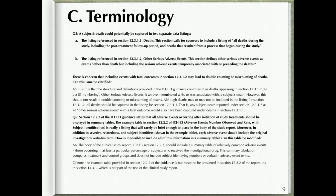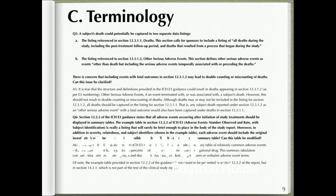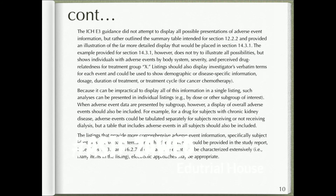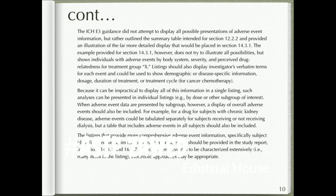Answer six: The body of the clinical study report (ICH E3 section 12.2.2) should include a summary table of relatively common adverse events — those occurring in at least a particular percentage of subjects who received the investigational drug. This summary tabulation compares treatment and control groups and does not include subject identifying numbers or verbatim adverse event terms. The example table provided in section 12.2.2 of the guidance is not meant to be presented in section 12.2.2 of the report but in section 14.3.1, which is not part of the text of the clinical study report.